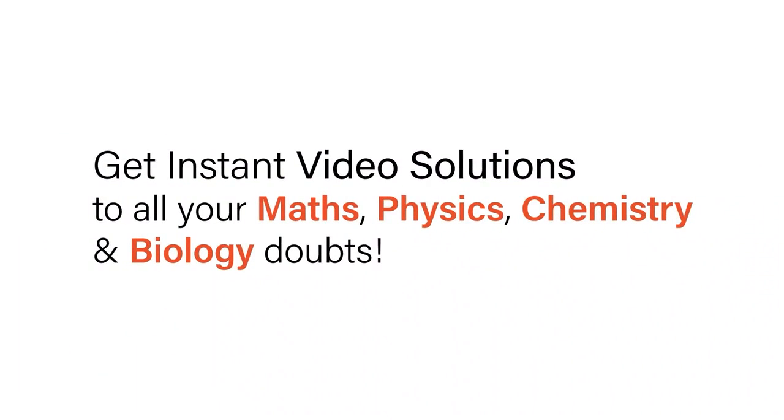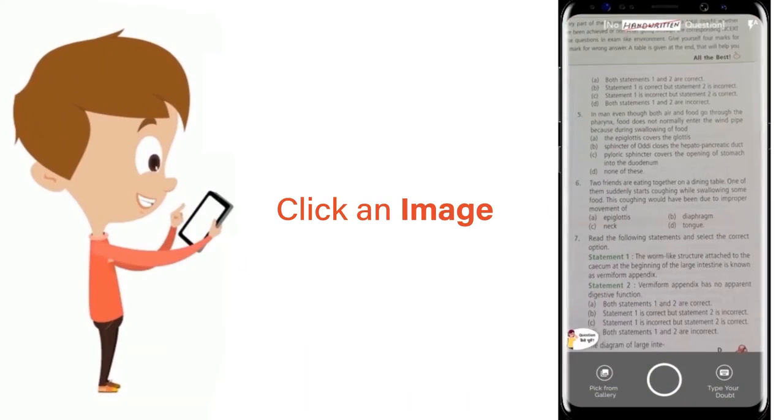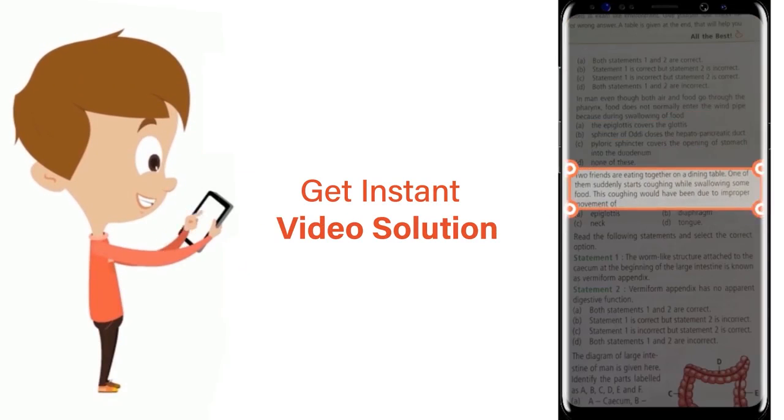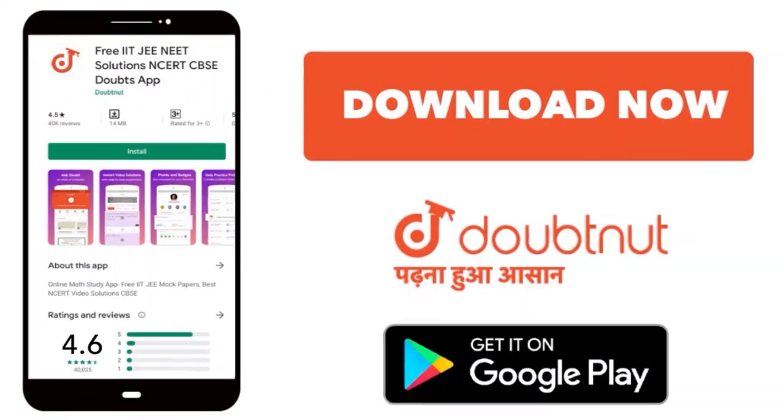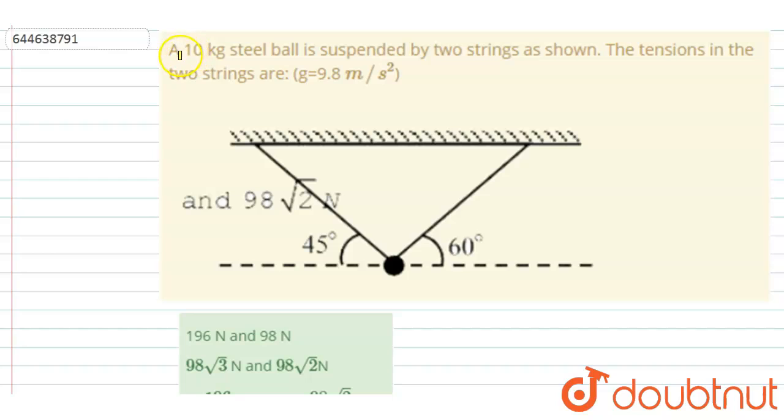With Doubtnet, get instant video solutions to all your maths, physics, chemistry and biology doubts. Just click the image of the question, crop the question, and get instant video solution. Download Doubtnet app today. Hello everyone, a 10 kg steel ball is suspended by two strings as shown in the figure.